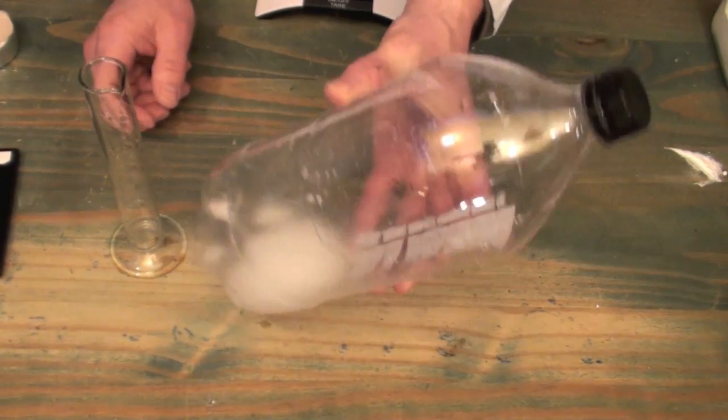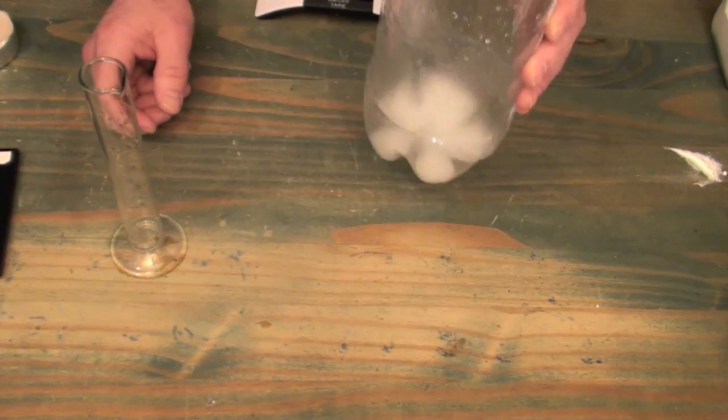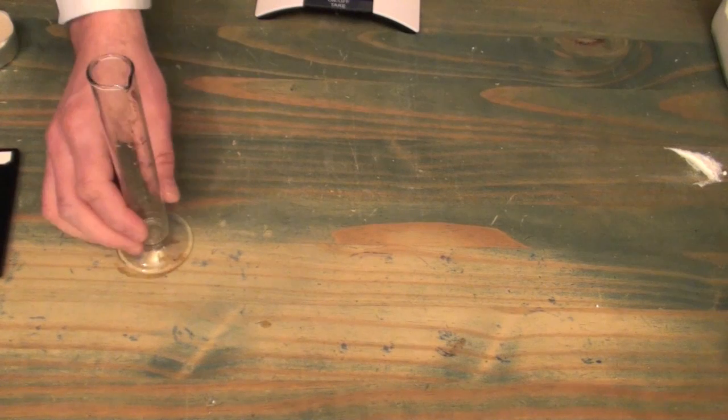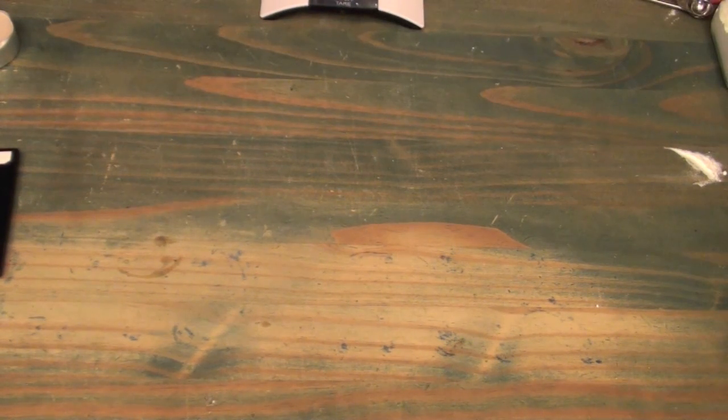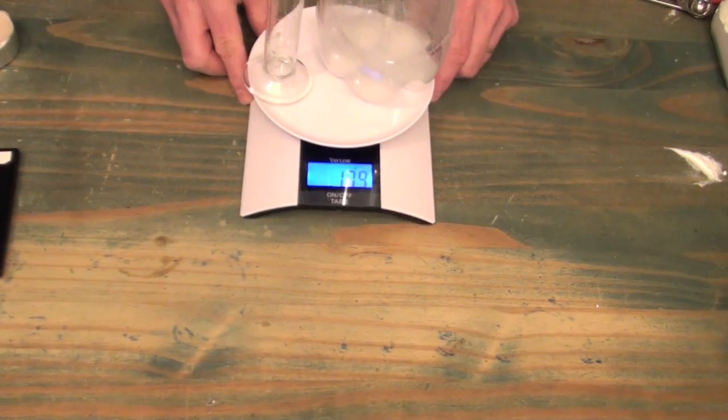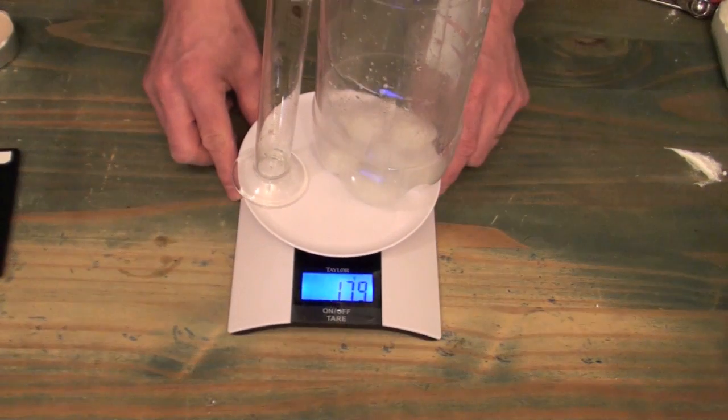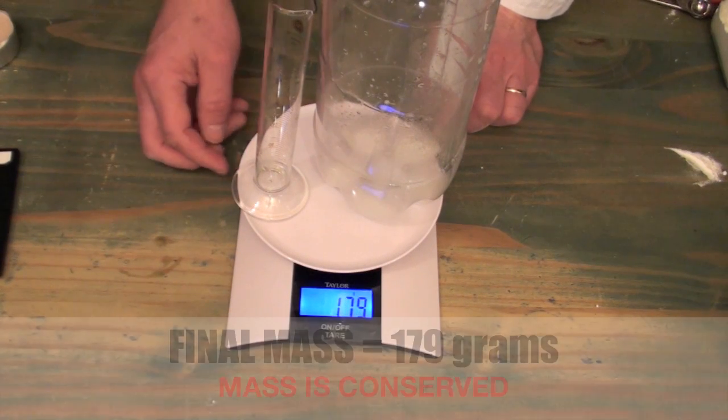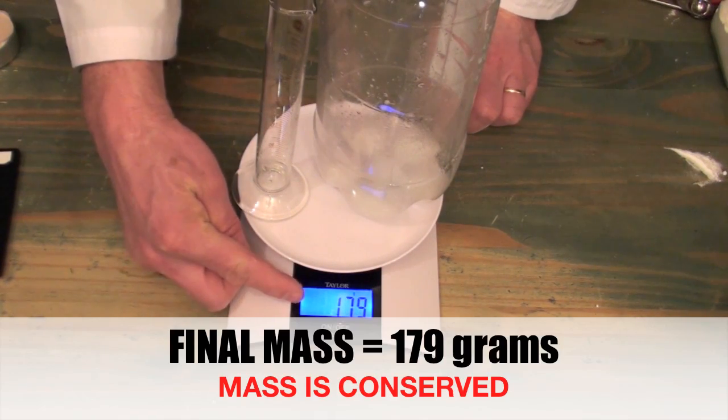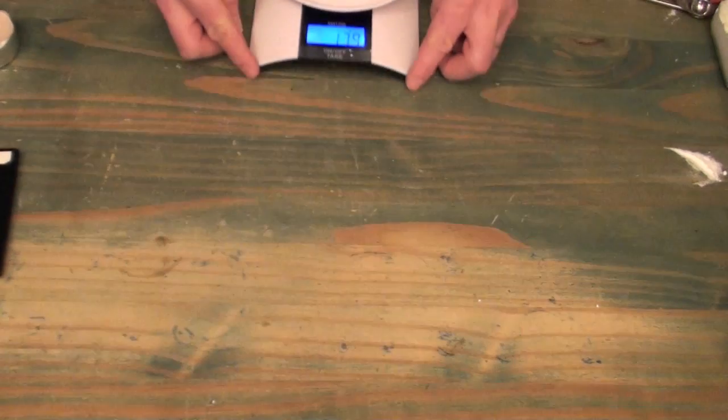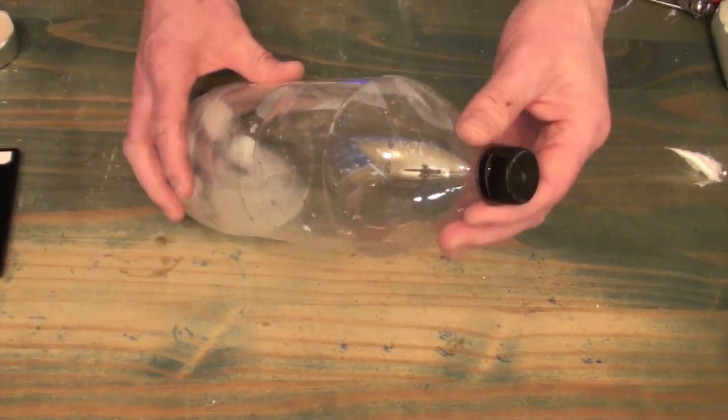So now that our reaction is complete what we're going to do next is take all these components and again put them back on the scale. And we can see that the measurement for mass is exactly the same, 179 grams. So just because a chemical reaction has occurred doesn't mean that there's a change in mass.